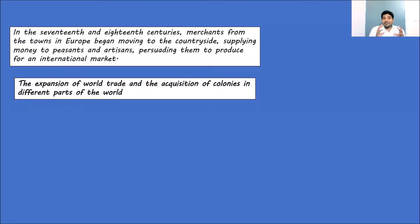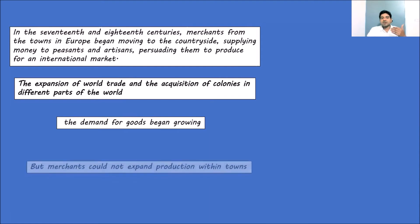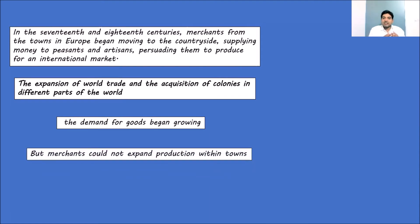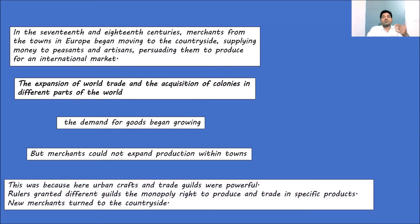The expansion of world trade and the acquisition of colonies in different parts of the world caused trade to expand. Countries like England started acquiring colonies across the globe, especially in Asia and Africa. This created a growing demand for goods. As demand increased, merchants could not expand their production within the towns and started moving towards the countryside.